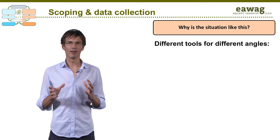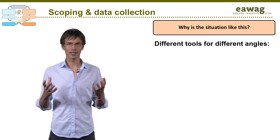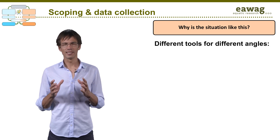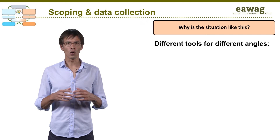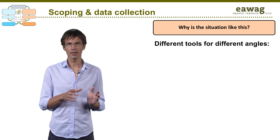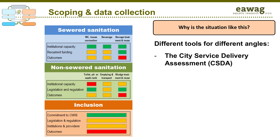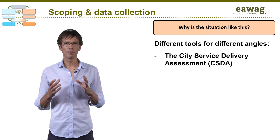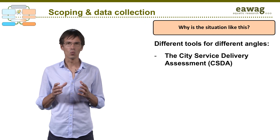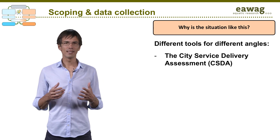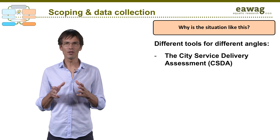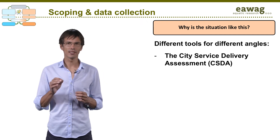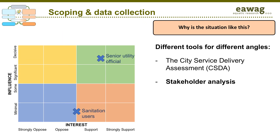Let's now move to the enabling environment part — the question of why a situation is like it is. We need to look at the situation from different angles. There is no single tool that can do all of that, but you can use methods to help you address each angle more systematically. The City Sanitation Service Delivery Assessment, or CSDA, is the most exhaustive tool to address the different dimensions of the enabling environment. Such a tool helps to collect data in a systematic way while engaging stakeholders, and will be presented in detail in a dedicated module. A key message: the process is as important as the result. If you want to understand the stakeholders in order to develop a stakeholder engagement strategy, you can do a stakeholder analysis.